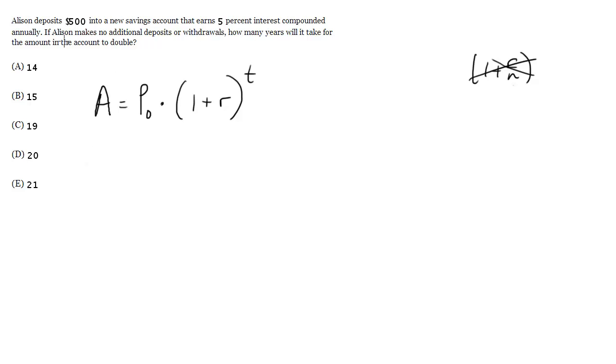So let's put in our numbers. We want this to double, so we're going to set this equal to 1,000 because our starting point is 500. 1 plus R, well the percent is 5, so we're going to make this 1.05, and then to the T. And now we just have to solve for T. So 2 equals 1.05 to the T.